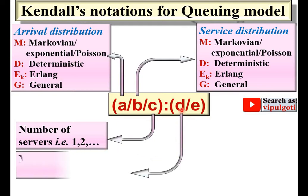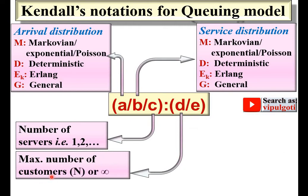Next, D represents the maximum number of customers, and that is generally represented by N or as finite. If it is infinite, it is represented with the infinite symbol. The maximum number of customers in the queue is represented by capital N, and it is sometimes called the queue capacity.